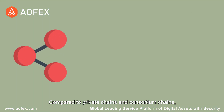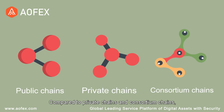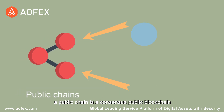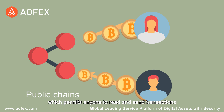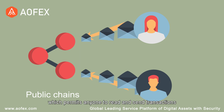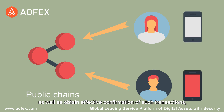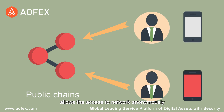Compared to private chains and consortium chains, a public chain is a consensus public blockchain, which permits anyone to read and send transactions, as well as obtain effective confirmation of such transactions, and allows access to the network anonymously without registration and authorization.